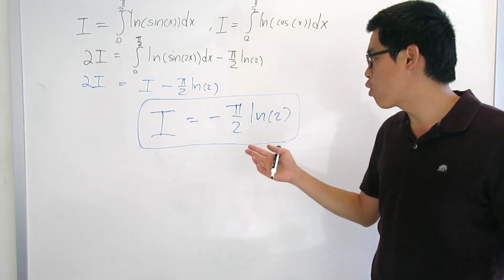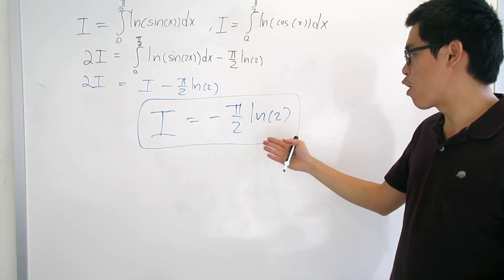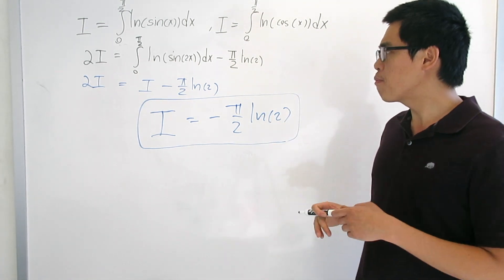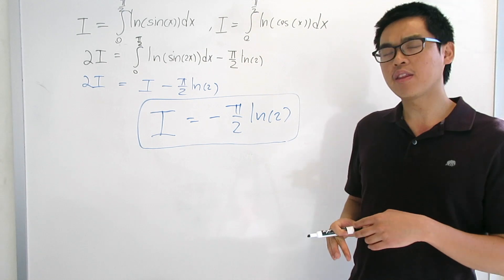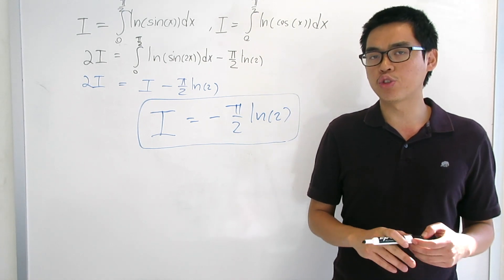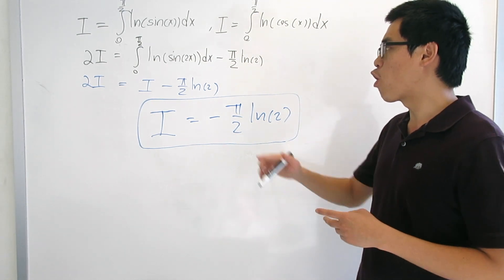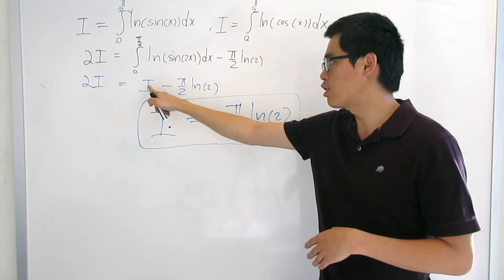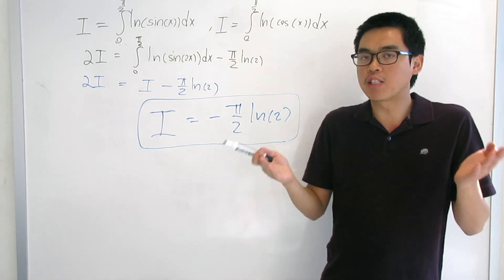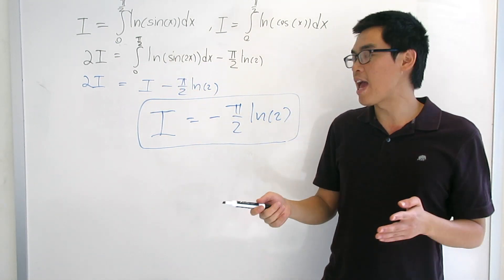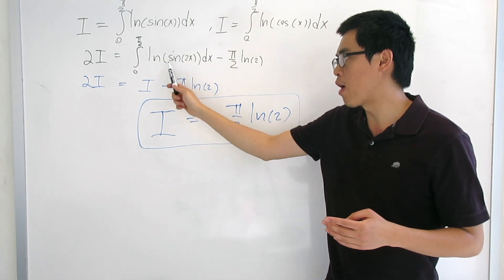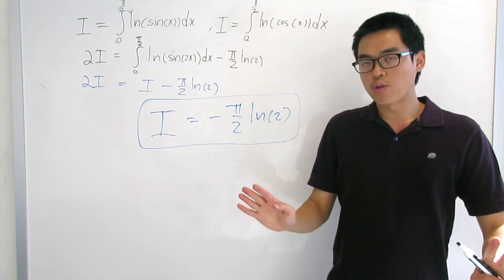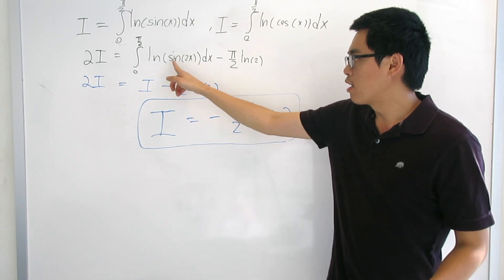So we have I = −(π/2)·ln 2, which turns out to be the correct answer. For me, I think this is a pretty nice solution. Of course, we haven't formally shown why that integral equals I, but the symmetry of sine gives a pretty good intuitive argument.